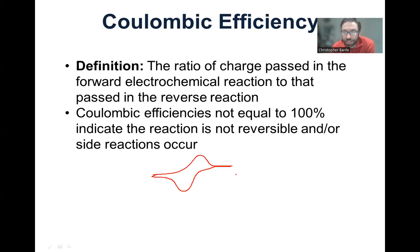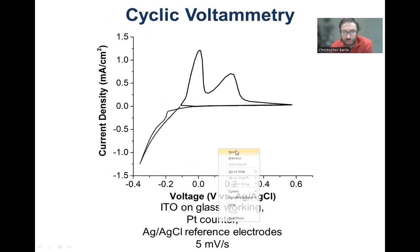And the way that you do this in a CV is actually integrate the area under this peak, and then divide by the scan rate, and that will give you the charge. But anyway, if you're just calculating Coulombic efficiencies, you can just compare the amount of charge passed. You don't have to divide by the scan rate because you're just comparing a ratio of the two.